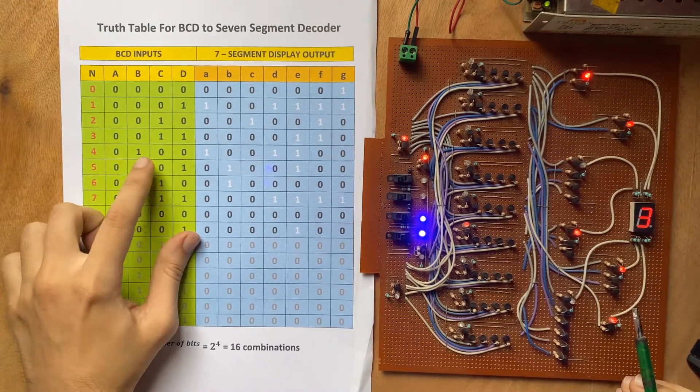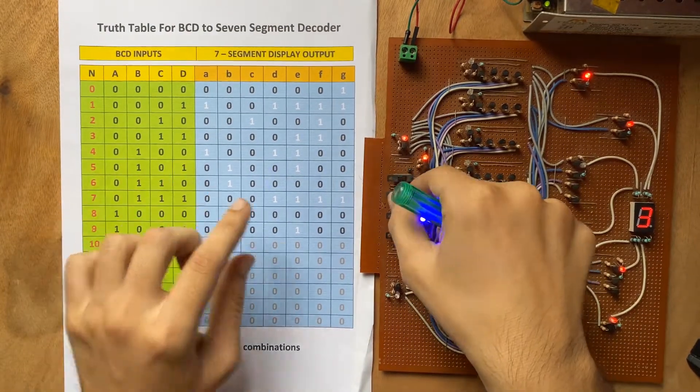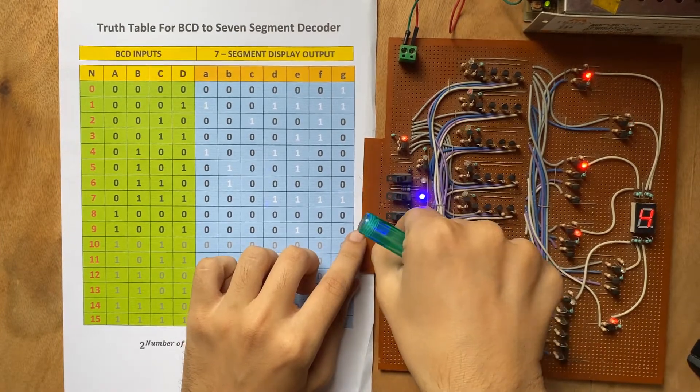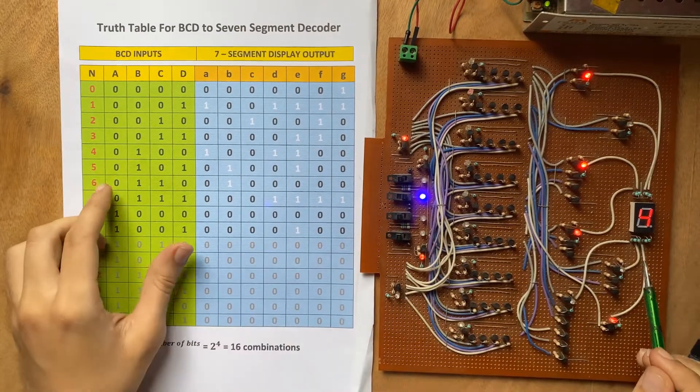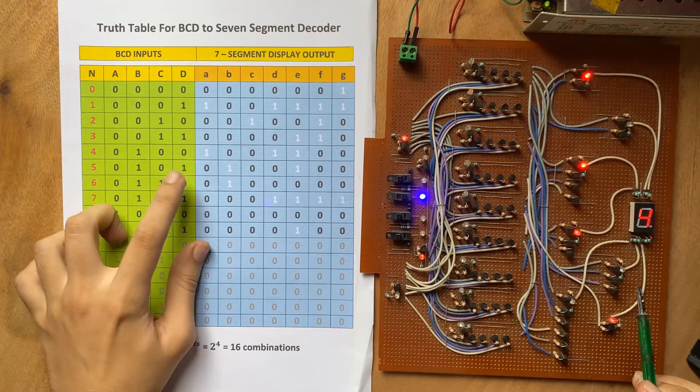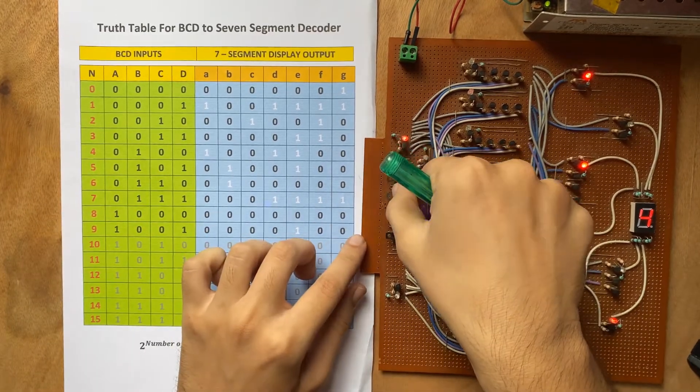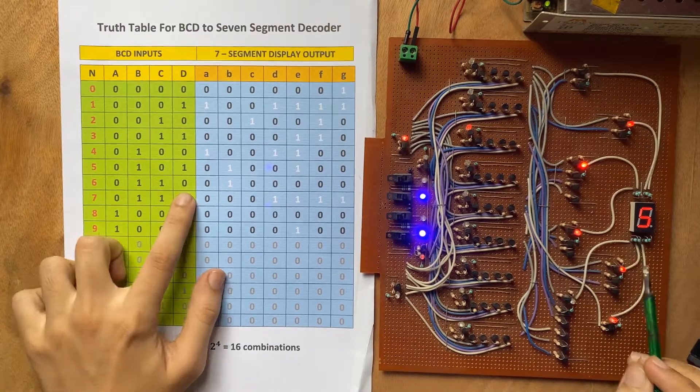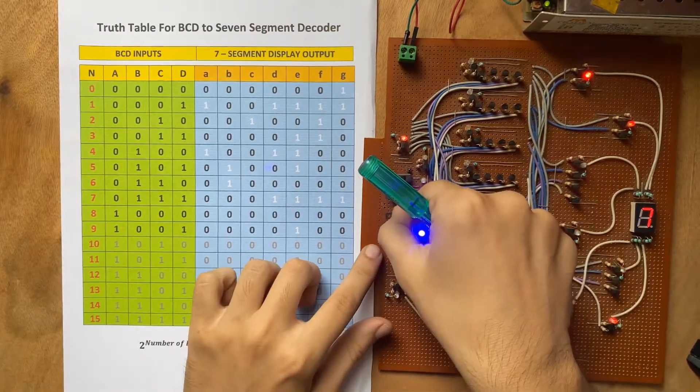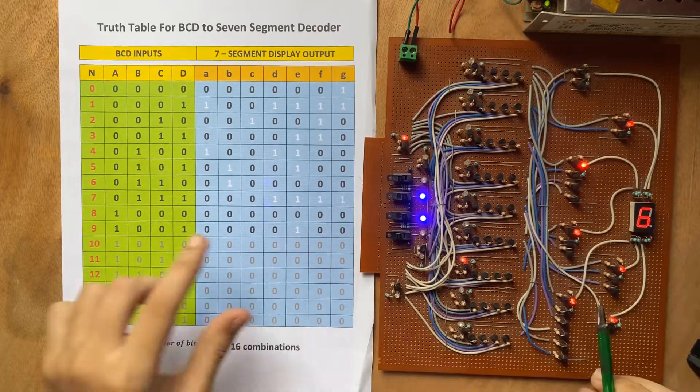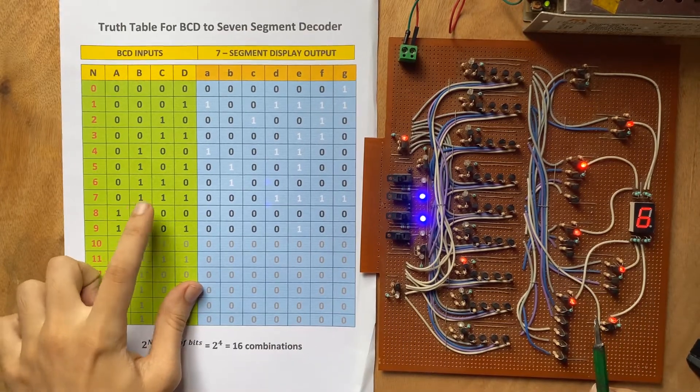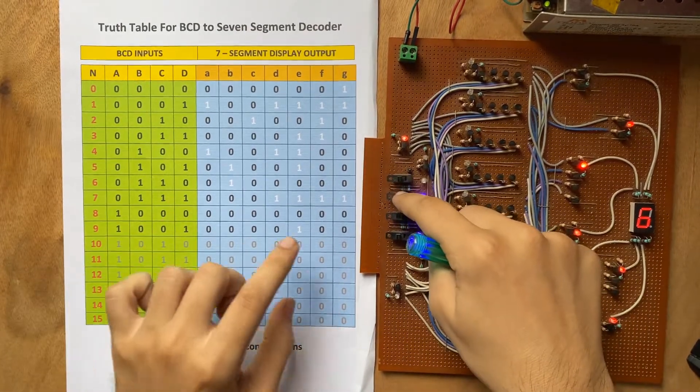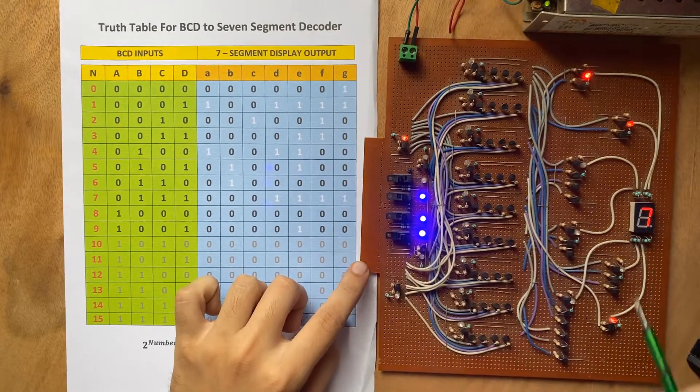Next for 4, 0100, so 0100, it is 4. For 5, it is 0101, so 0101, it is 5. Next for 6, it is 0110, so 0110, it is 6. Next for 7, it is 0111, so 0111, it is 7.